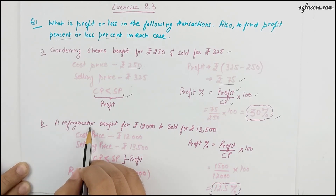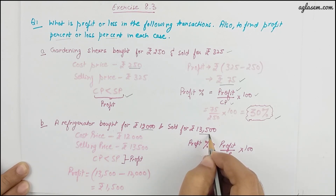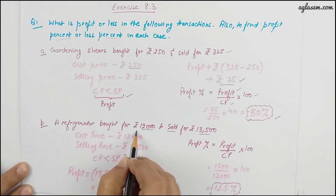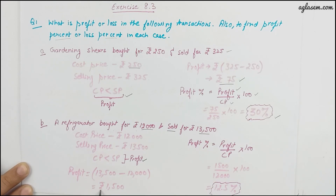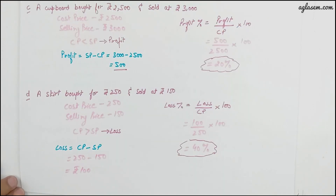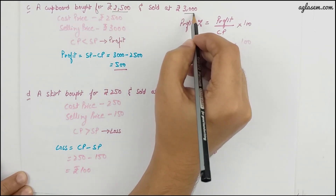Part (b): a refrigerator bought for 12,000 rupees has been sold for 13,500. This is again a profit since the selling price is higher than the cost price. Profit is 13,500 minus 12,000, which is 1,500 rupees. Profit percentage is 1,500 divided by 12,000 multiplied by 100, giving 12.5 percent.